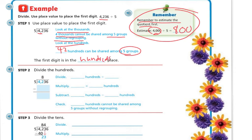Step 2: divide the hundreds. I divide 42 hundreds by 5. I multiply 5 times 8 hundreds, which is 40 hundreds. Then I subtract 40 hundreds from 42 hundreds and get 2 hundreds left that cannot be shared among the group.